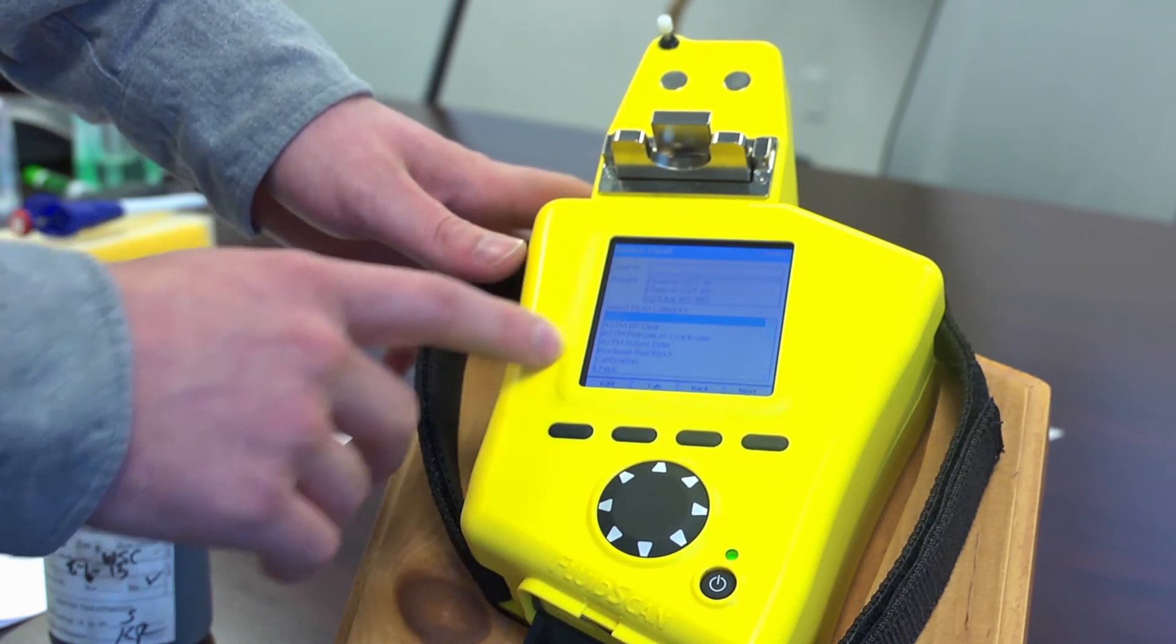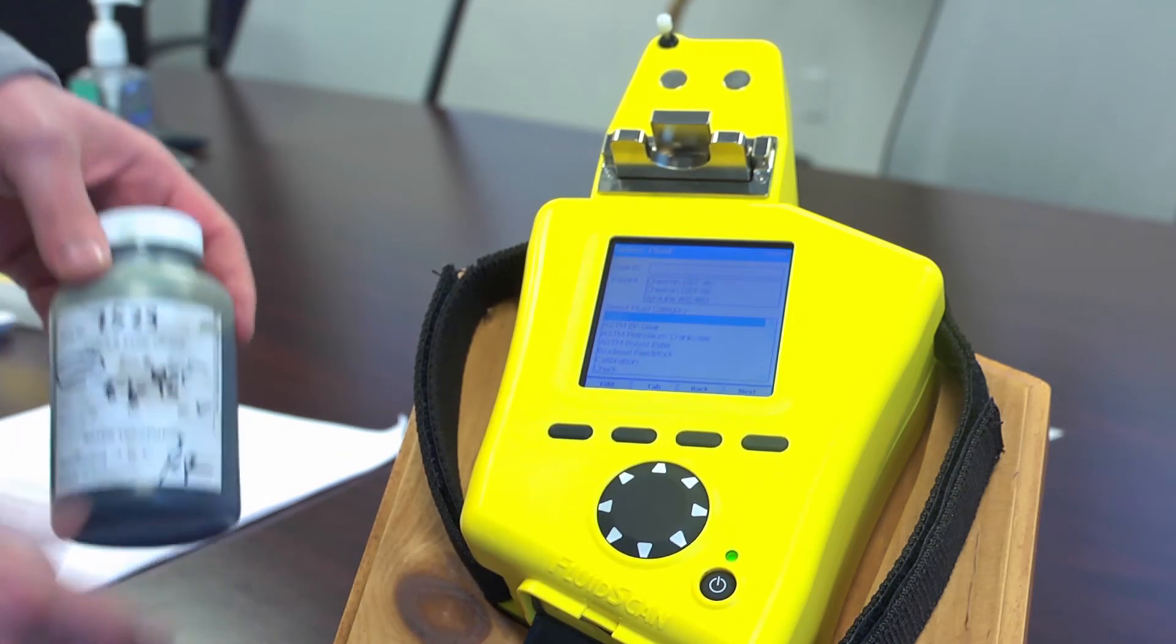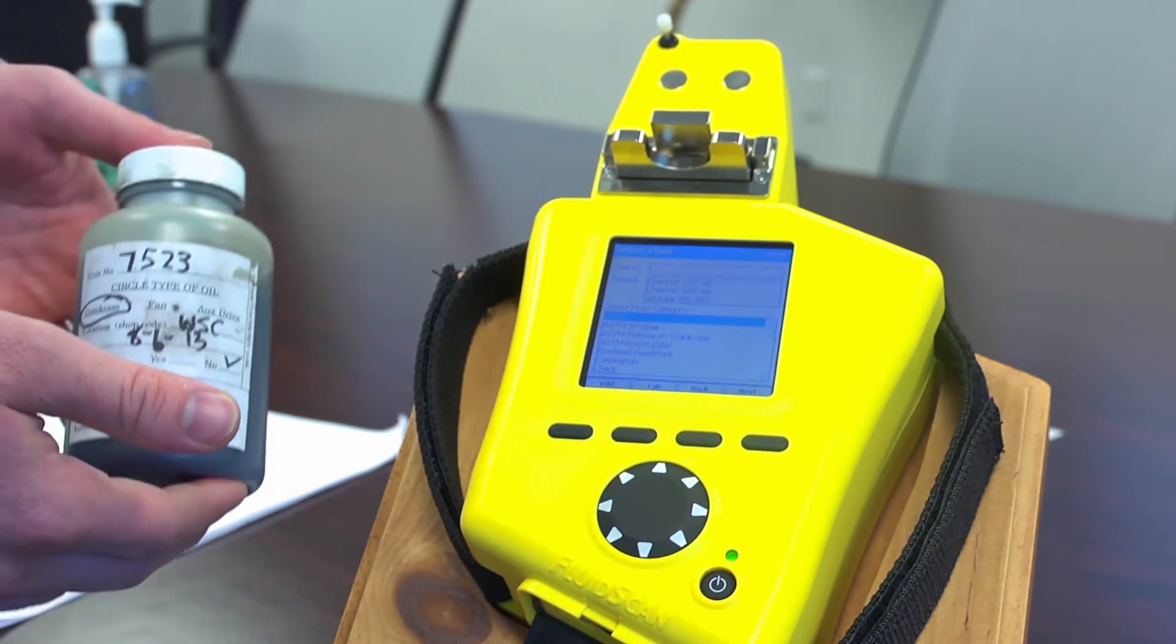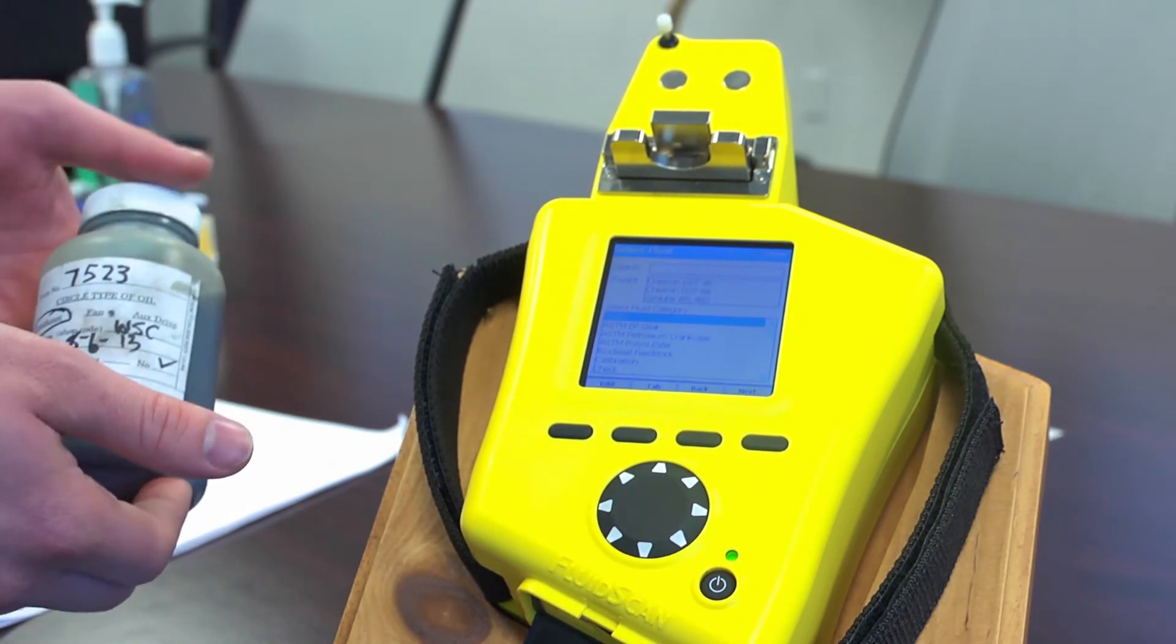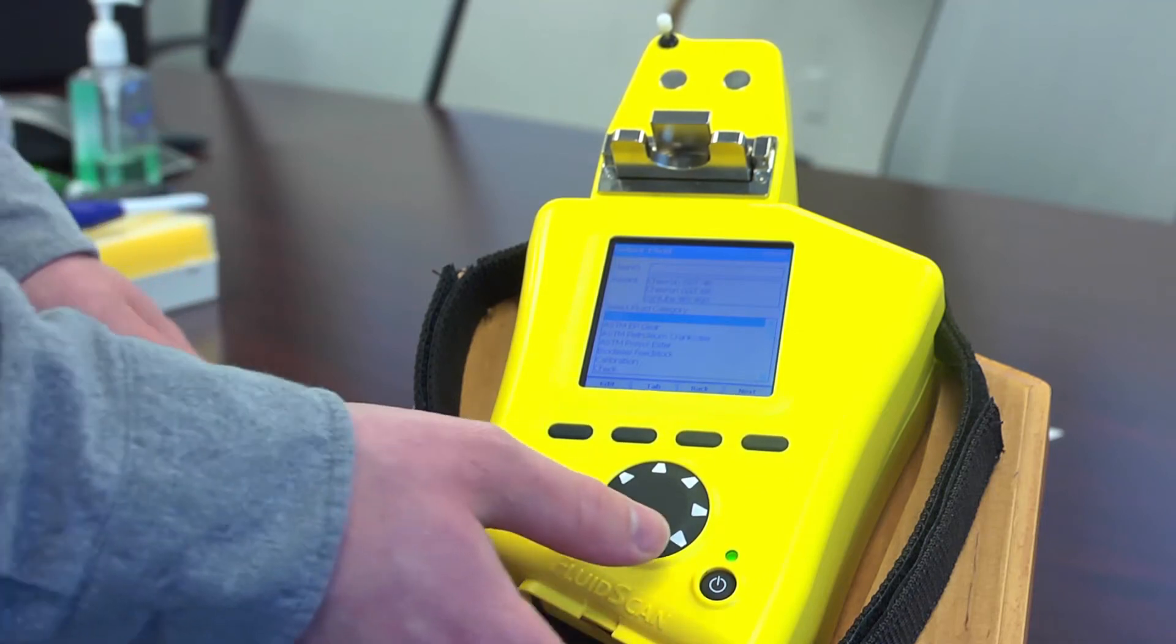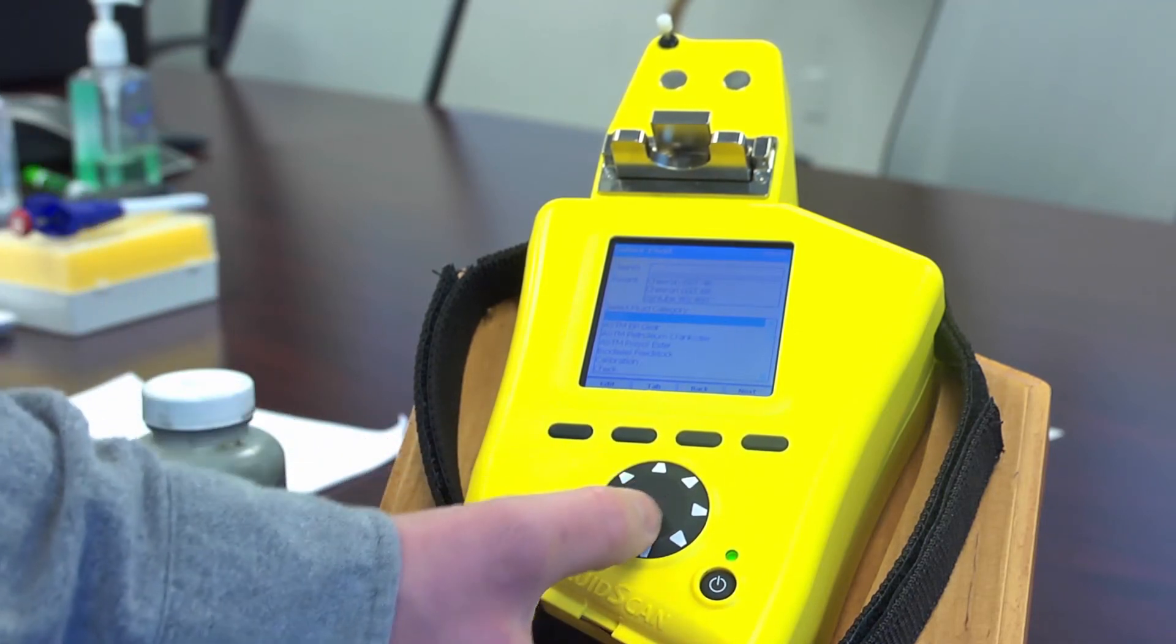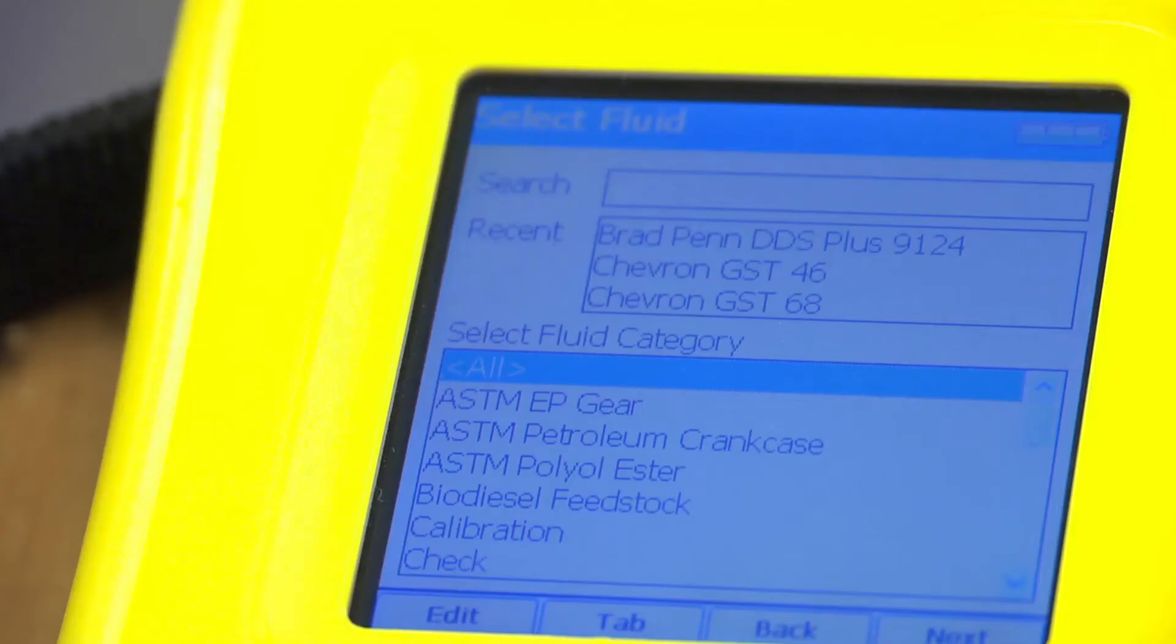It will prompt you to select the fluid that we have. This is a heavy engine oil that is used in locomotive industry. Before using the fluid scan, it is best to know exactly what you are measuring against as it does compare the spectra between known fluids.